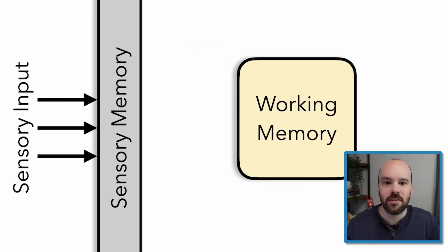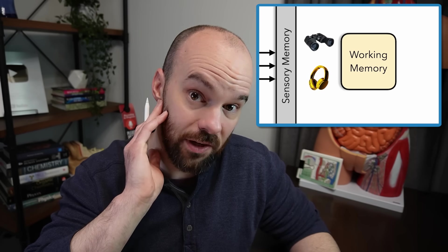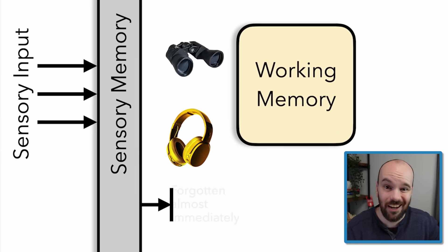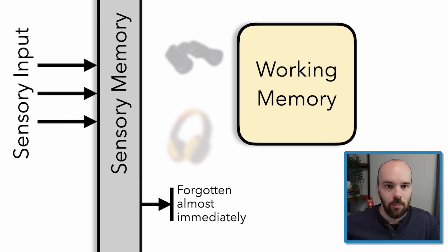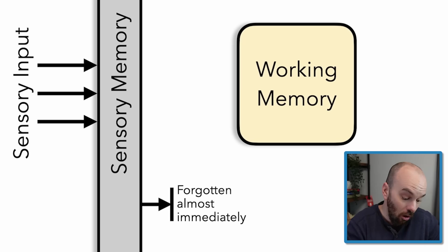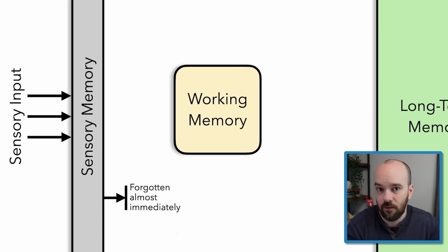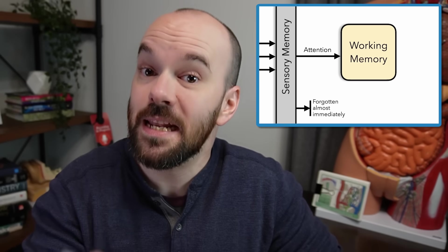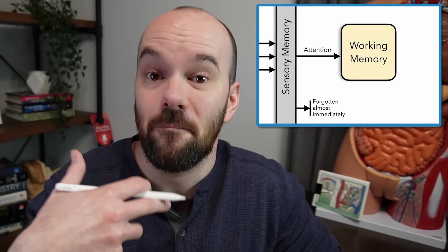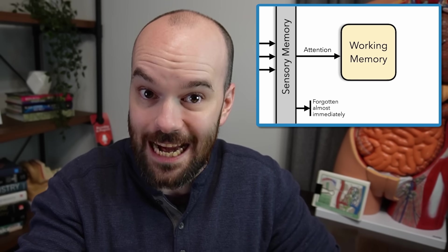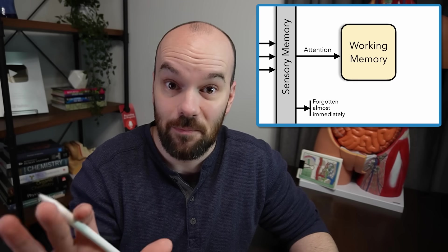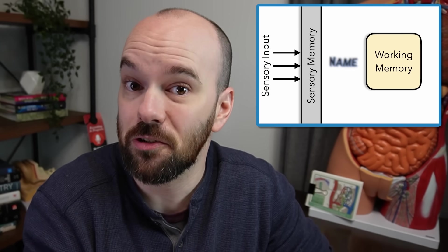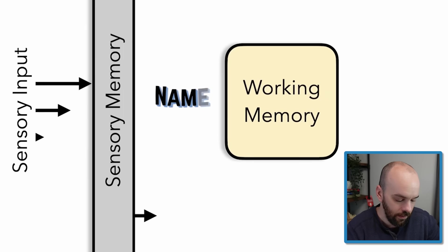At any given time, there's tons of sensory input coming in — visual input, auditory input, things happening in the background. Your brain is filtering out the vast majority of it; most of it is forgotten almost immediately. Our brains have evolved to do that — we don't want too much information overloading our working memory. So how do you get something from sensory memory to working memory? By paying attention to it. Here's my favorite example: I'm meeting somebody for the first time, I'm focused on saying the right thing, and I forget to pay attention to their name. They say their name, the sound waves hit my eardrums, that went to my brain — but I wasn't paying attention, so my brain filtered it out as not important. That's something entering sensory memory but forgotten almost immediately.